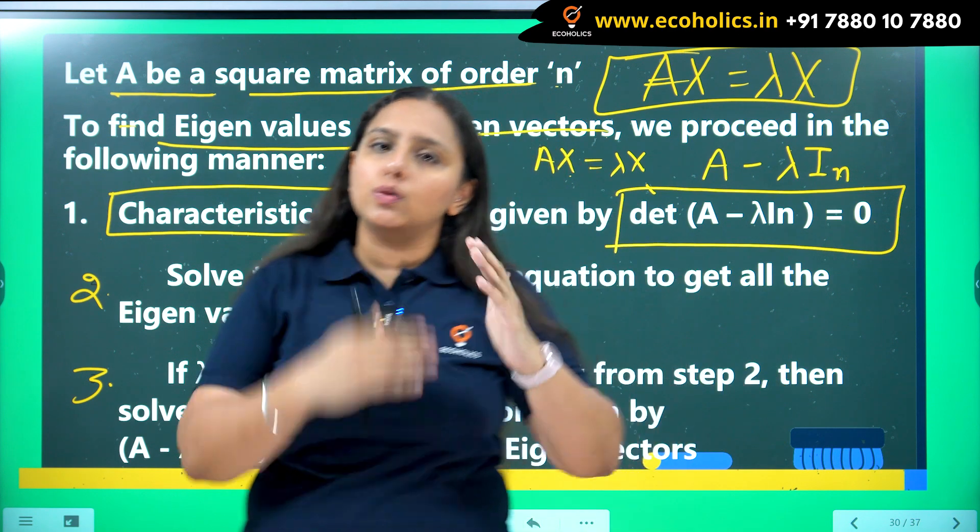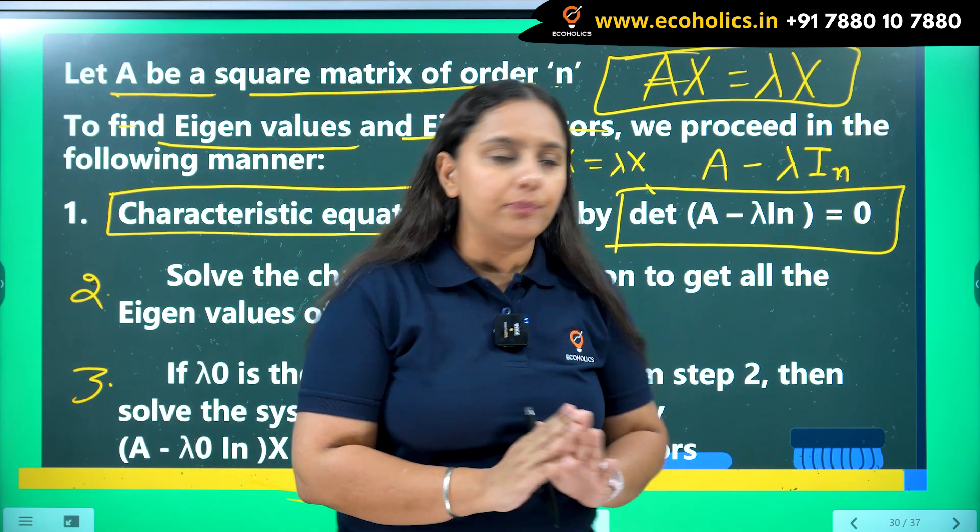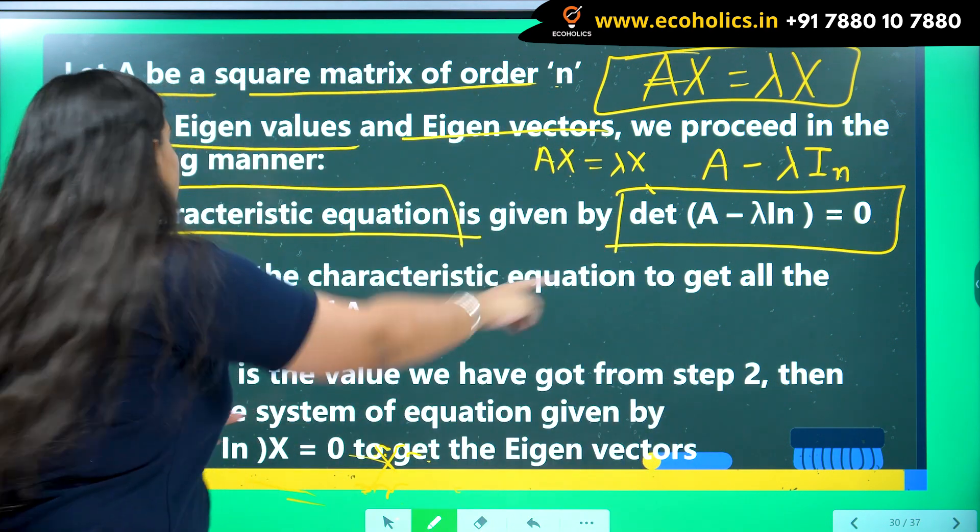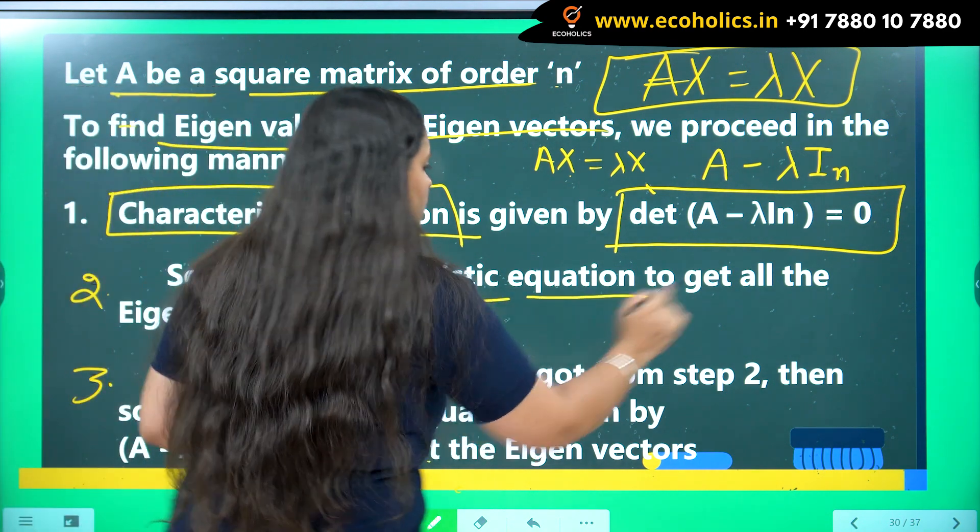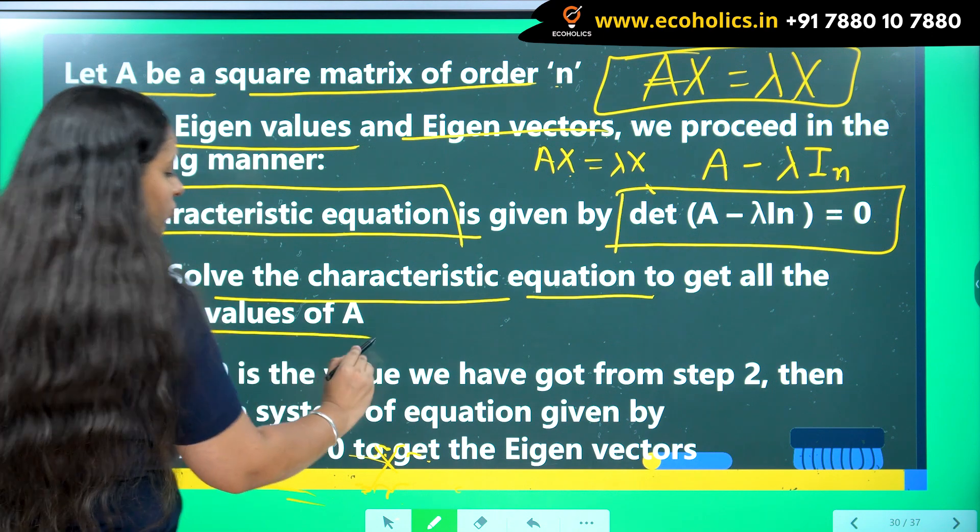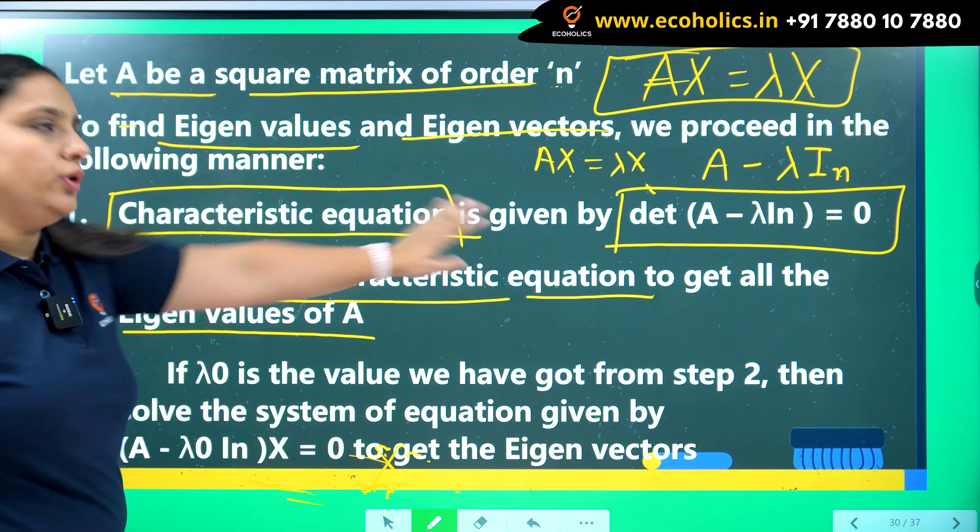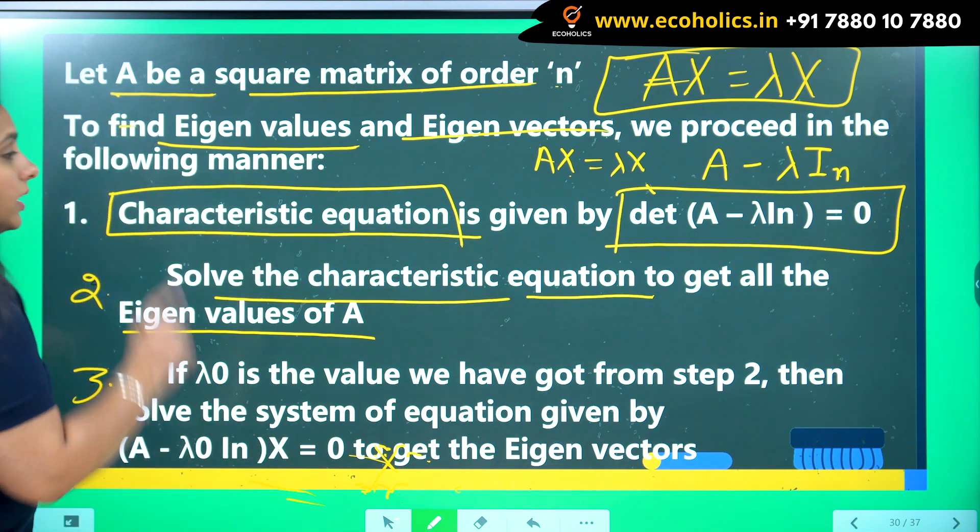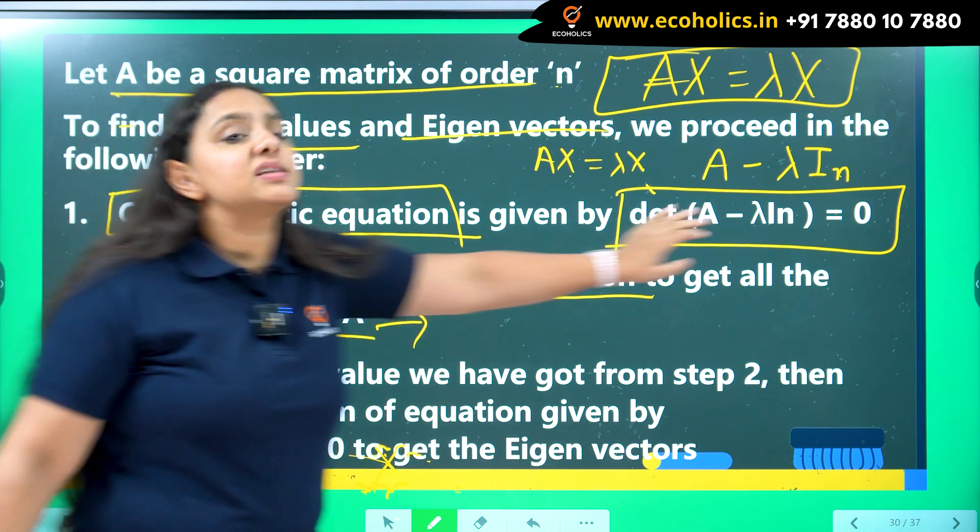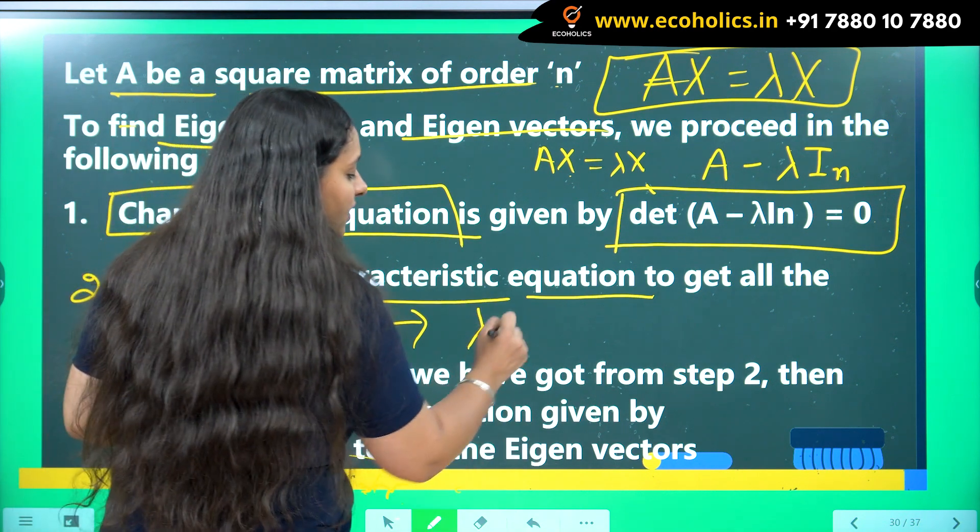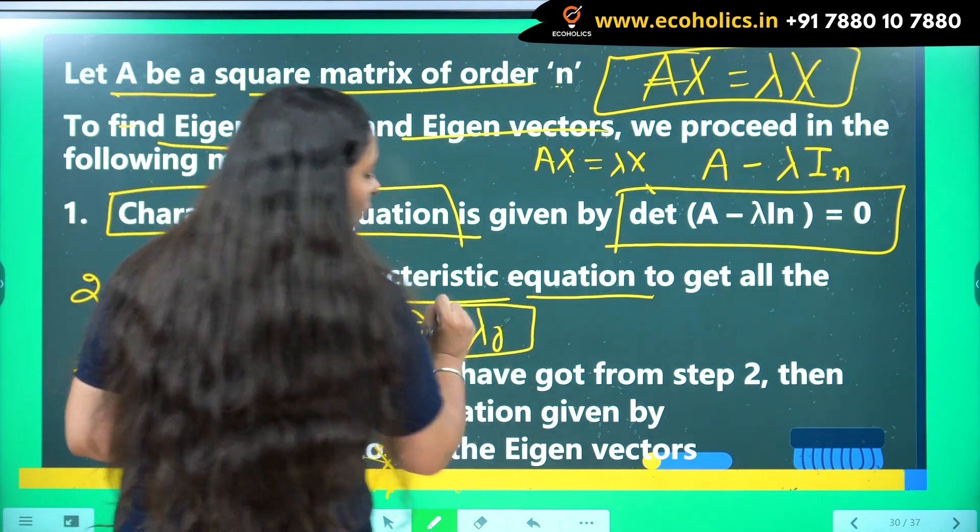If you solve that, you will get 1, 2 values of lambda. After getting those values of lambda, we have already solved the characteristic equation to get all the eigenvalues of A. I have told you over there only.